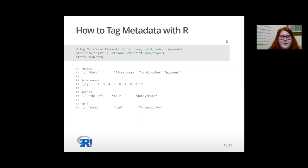Walking through the code, we can add a PII, or personally identifiable information, attribute to our data object through the attr() command and add the values name, CCN, and transaction to represent the first name, credit card number, and payment information in this dataset. We can then verify that this PII attribute was successfully attached to our data object through the attributes() command.